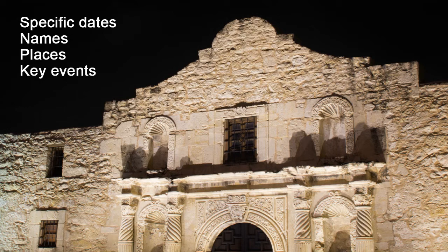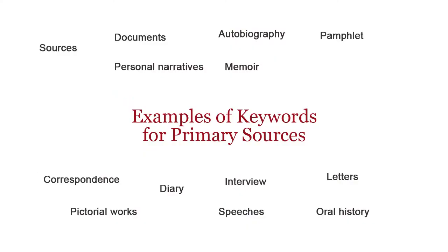After you brainstorm these ideas, you can then choose some keywords. Primary sources, in particular, have keywords specific to them. Some examples of keywords for primary sources include: sources, documents, personal narratives, autobiography, memoir, correspondence, letters, diary, interview, oral history, speeches, pamphlet, and pictorial works.